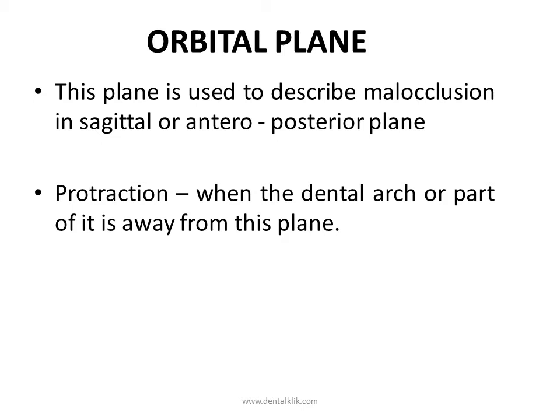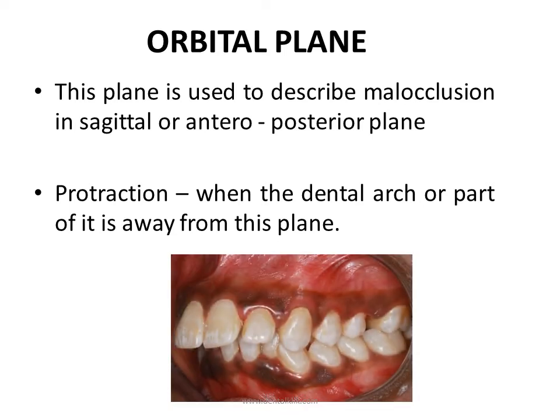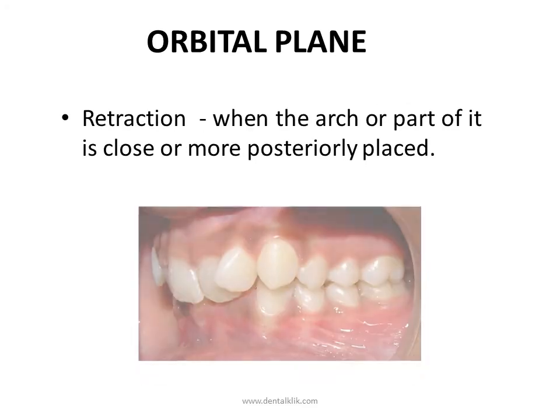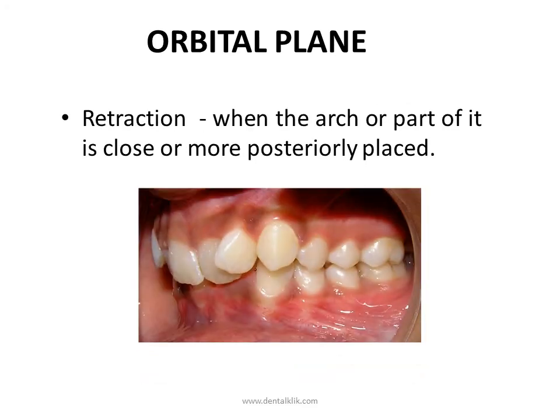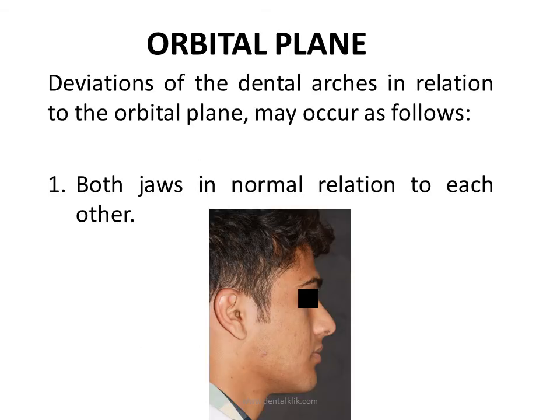Deviations from the Frankfort Horizontal Plane involve the angle between the Frankfort Horizontal and the occlusal plane. The form of the occlusal curve and inclination of the teeth axis are determined from this plane. Malocclusion can be of the following types: attraction, where the distance between the occlusal plane and the Frankfort Horizontal Plane is comparatively shorter than normal — this distance is normally shorter in young persons than in older persons and in some ethnic groups.